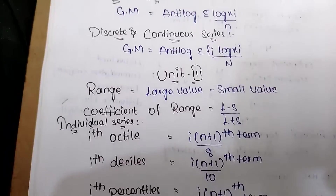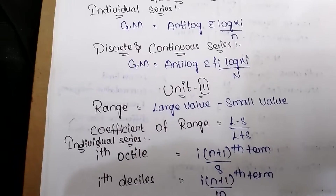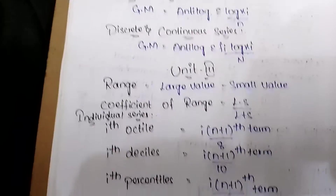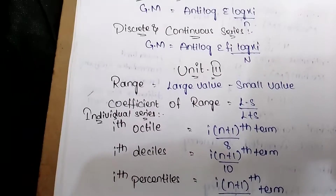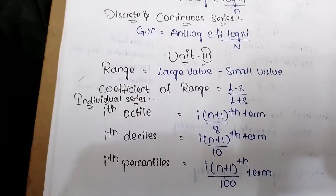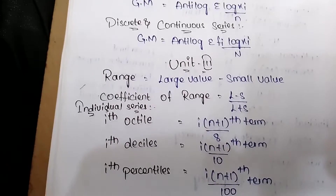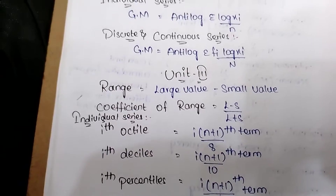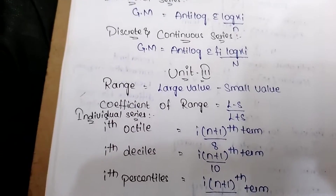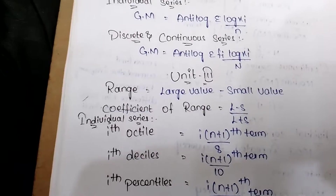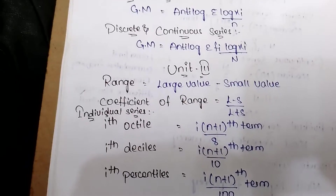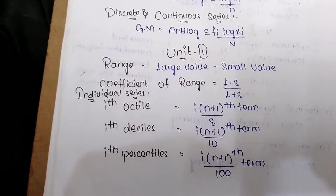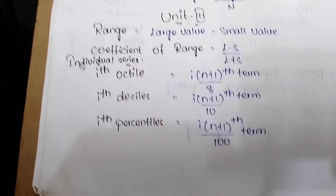For individual series — octiles, deciles, percentiles: octile Pi = i(n+1)/8 th term (since octile means 8). Decile Di = i(n+1)/10 th term, where i is the given number (e.g., D5, D6, D7). Percentile Pi = i(n+1)/100 th term.